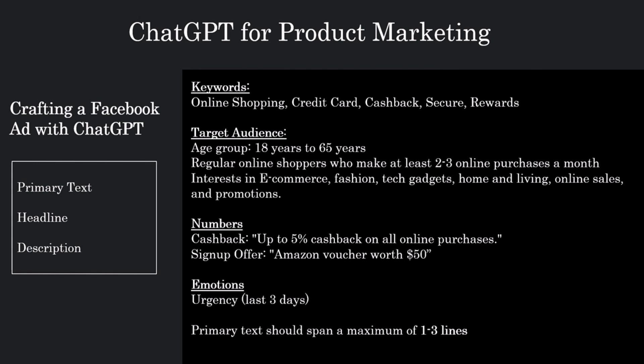Lastly, instead of generating just one option, create multiple alternatives. There are two advantages to doing this. First, it allows you to choose the one you prefer the most. Secondly, platforms like Facebook or LinkedIn offer A/B testing options, so you can provide multiple variations of primary text, headlines, and descriptions, and Facebook will test these different texts, showing the one that performs the best to a larger audience. Therefore, it is always better to generate multiple options — in this case, let's generate five options.